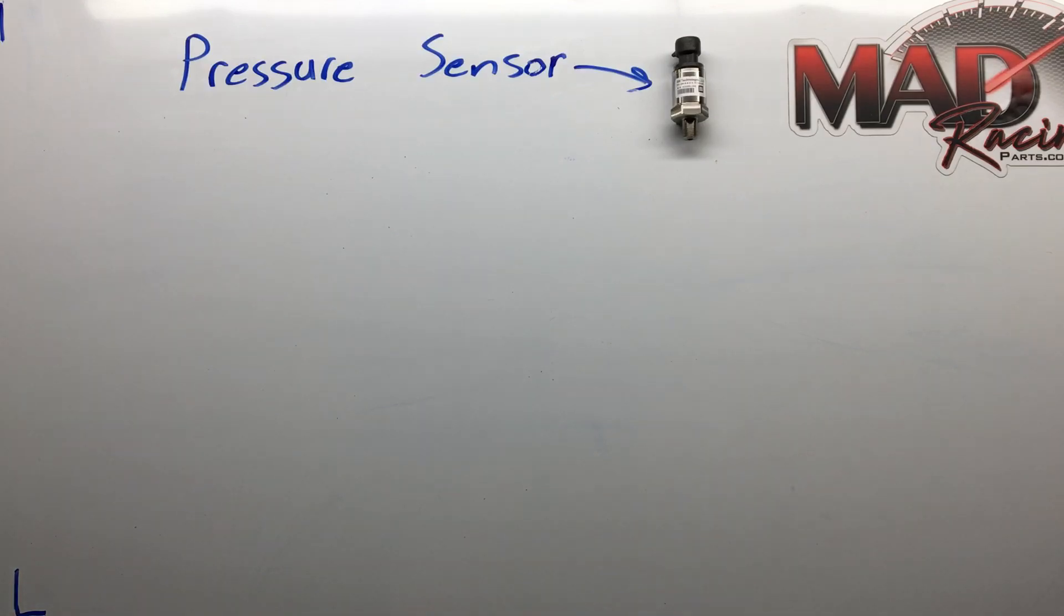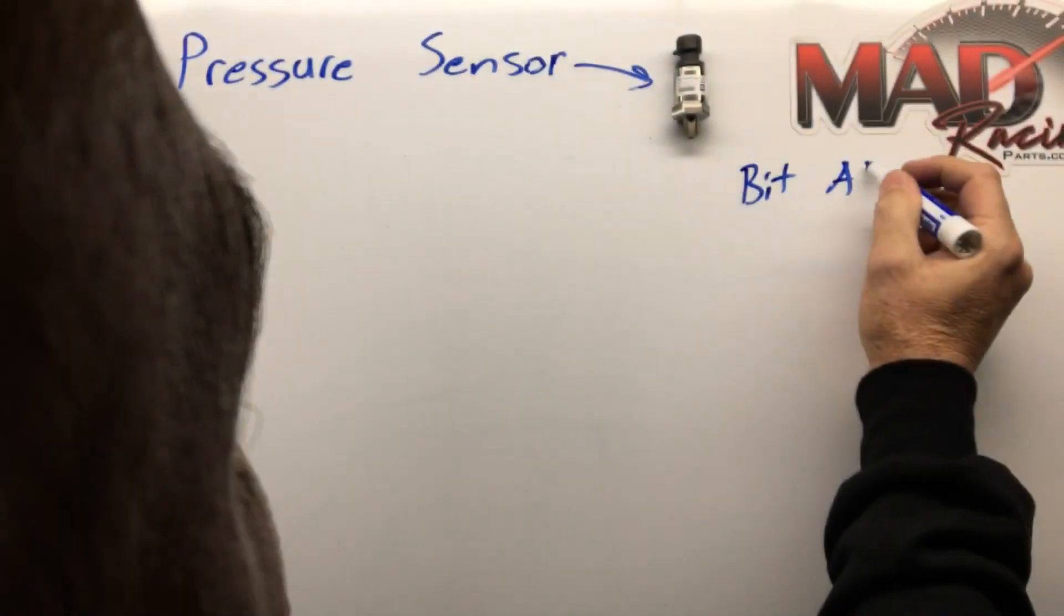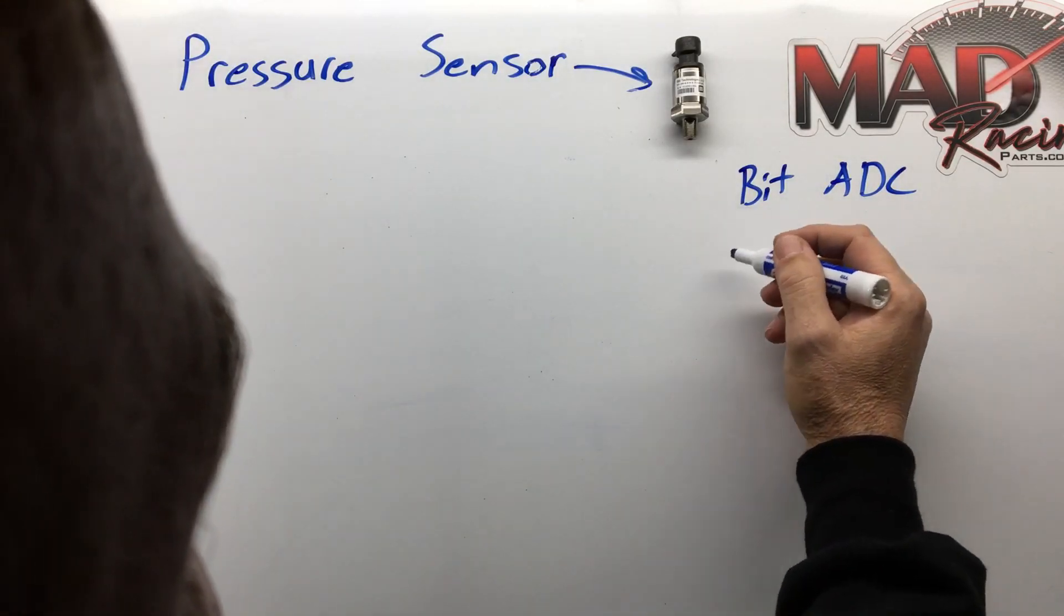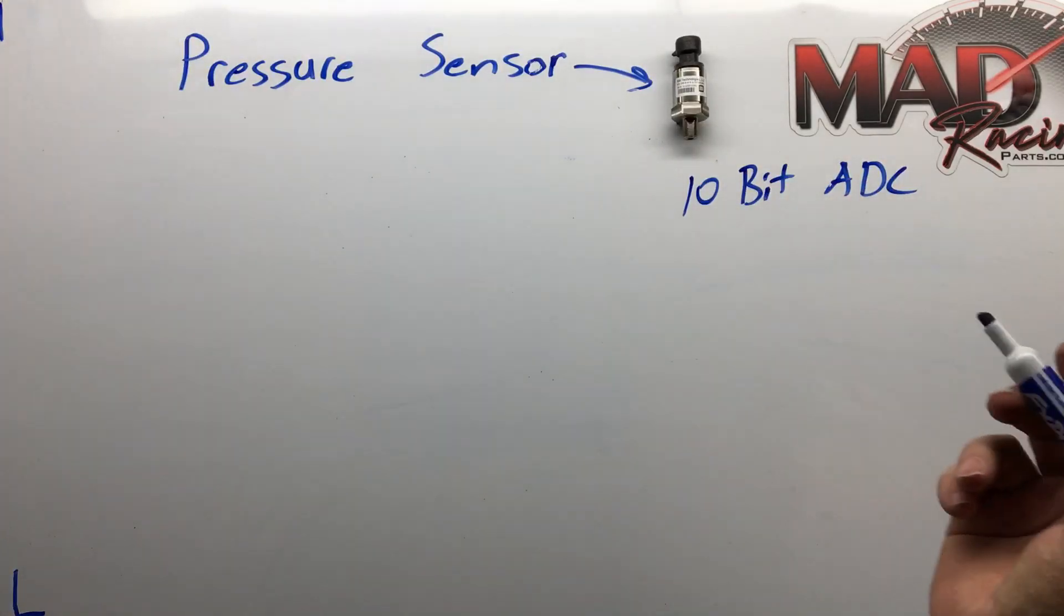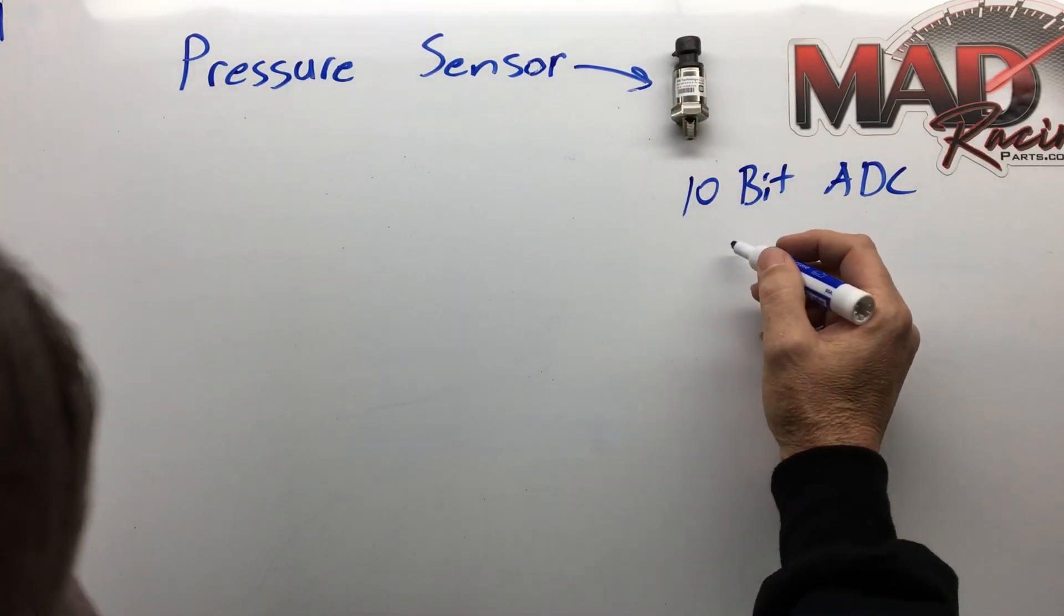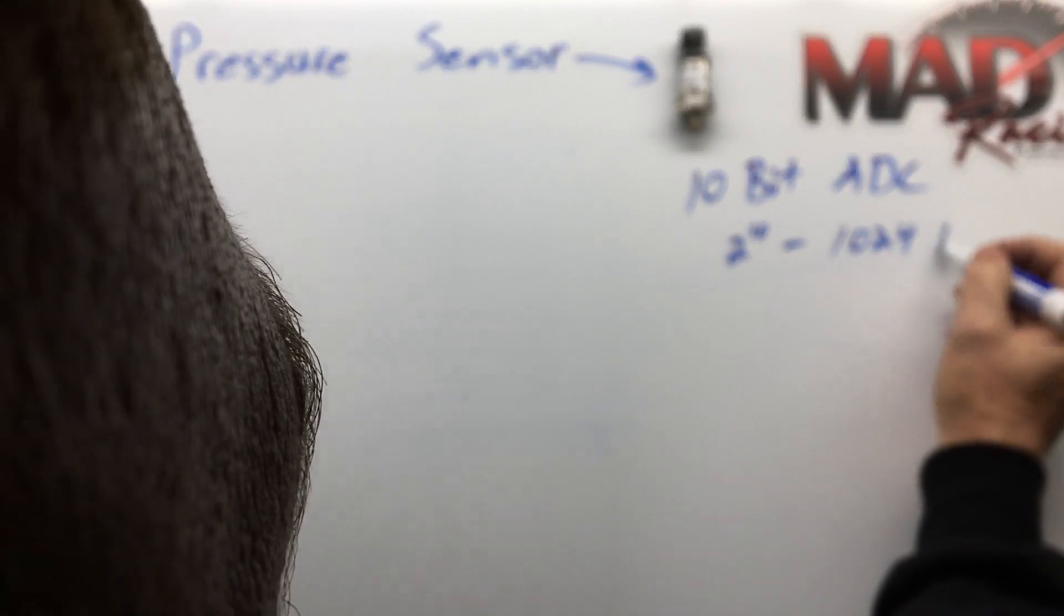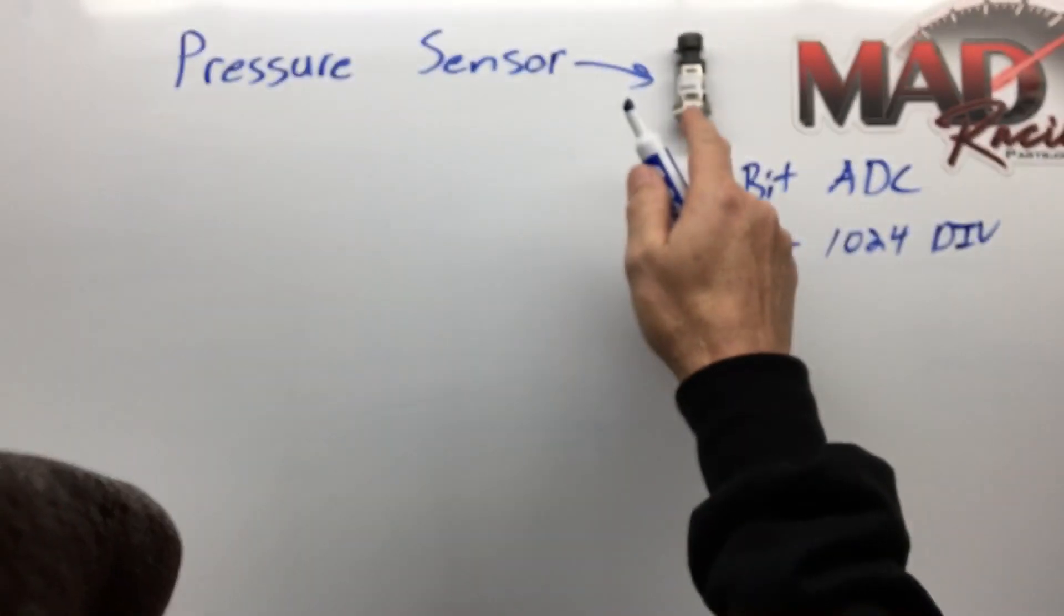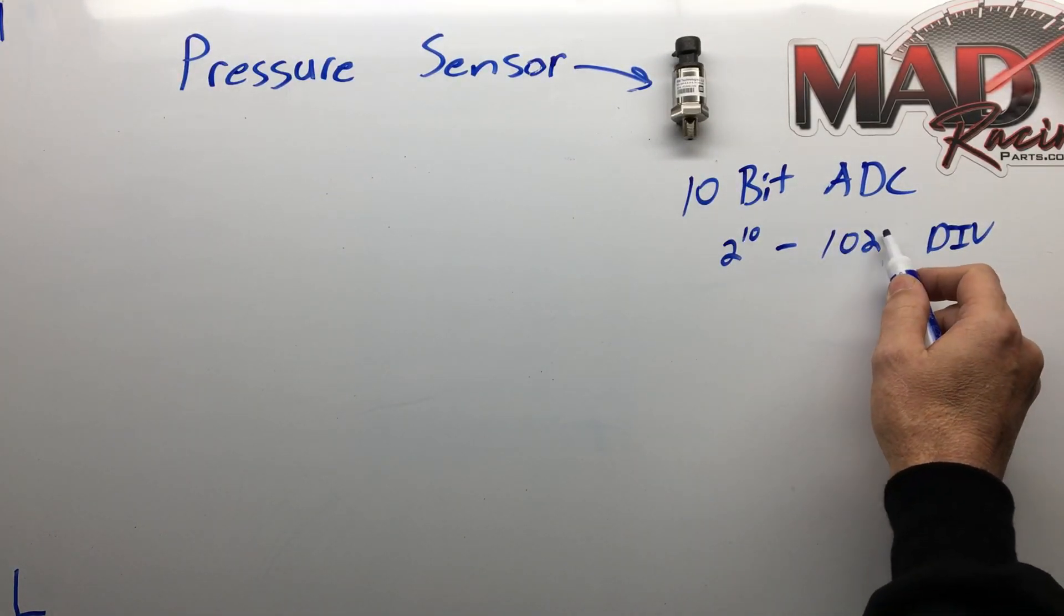Holley does not publish the bit rate or size on their ADC. I did a little bench testing and as near as I can calculate, it works out to somewhere around a 10-bit ADC. Now what does that mean? That means it's 2 to the power of 10, or 1024 pieces or divisions. That means on this 0 to 5 volt signal, 0 volts would be the number 0 and 5 volts would be the number 1024, actually 1023 because you lose a digit for zero.